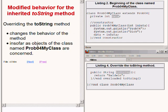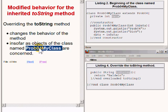The toString method, as defined in the Object class, has default behavior which isn't very interesting. If you define a class and override the inherited toString method, you will change the behavior of the toString method from its default behavior to your newly defined behavior for objects of the class. Overriding the toString method in the code on the bottom right of your screen changes the behavior of the toString method for objects of the class named prob04 MyClass.